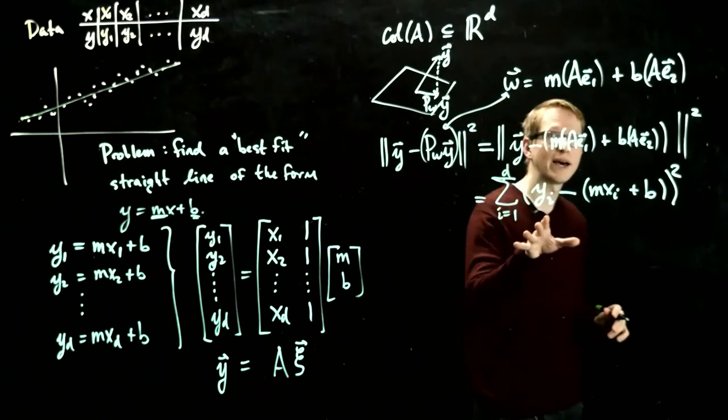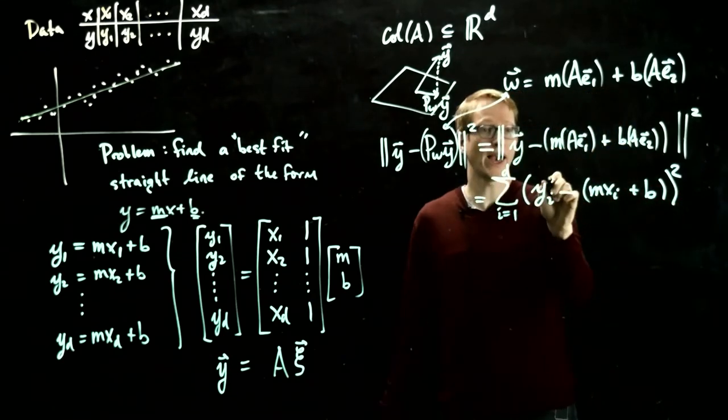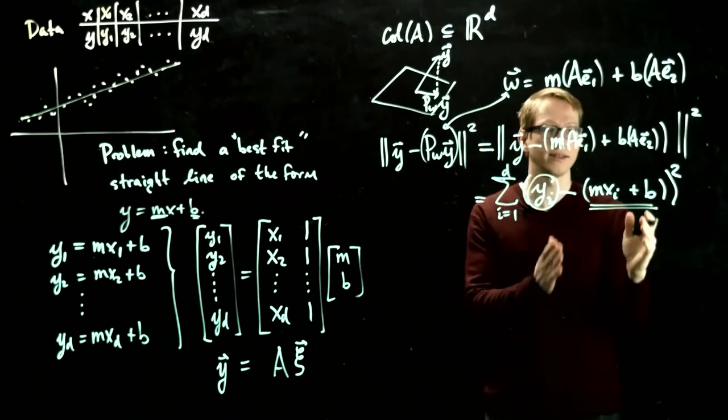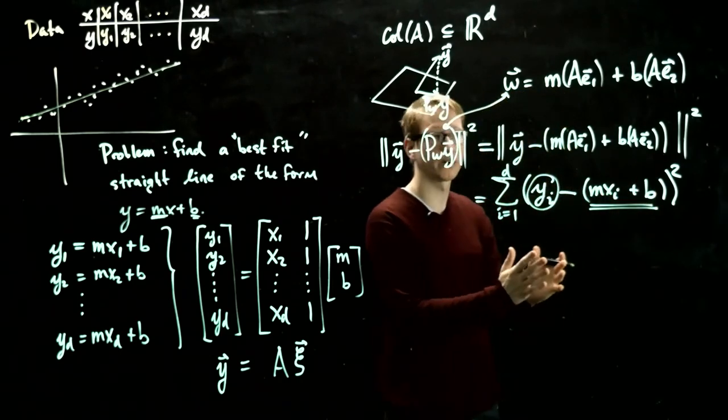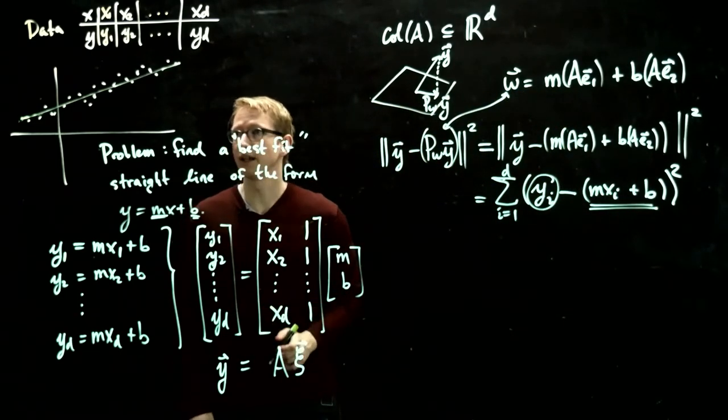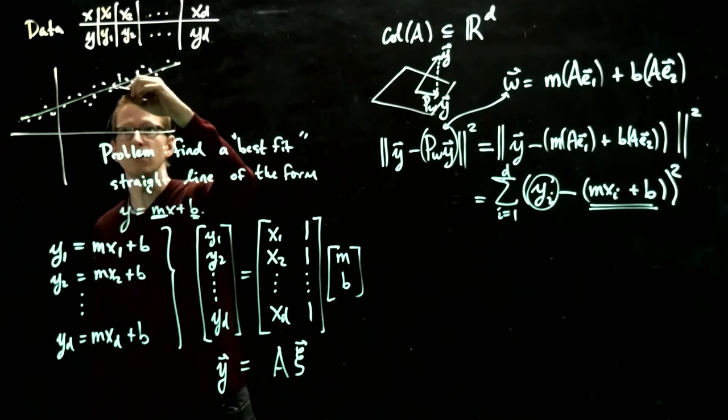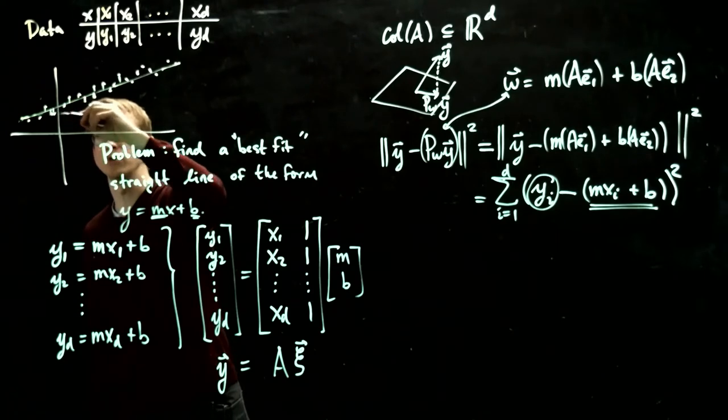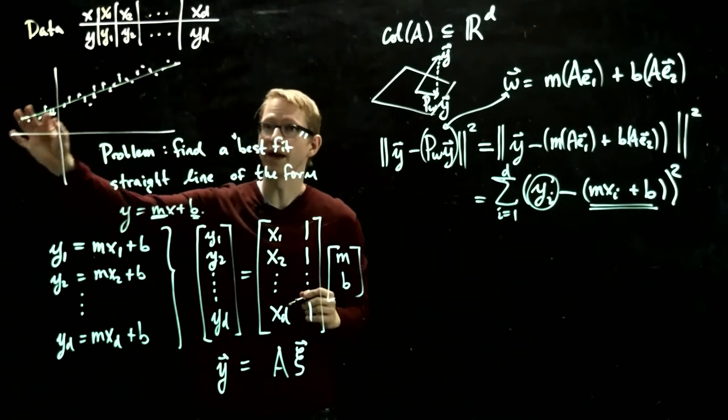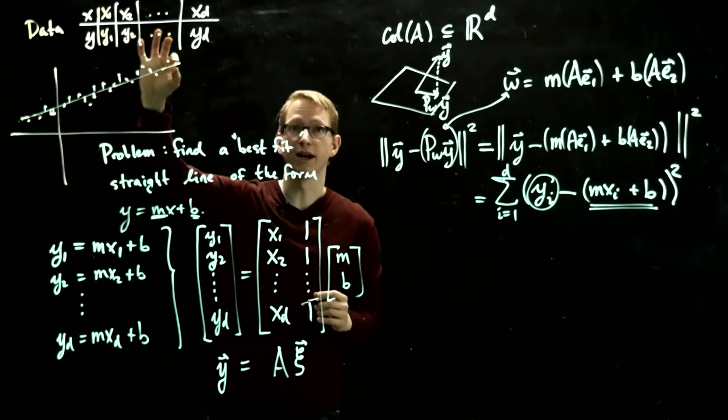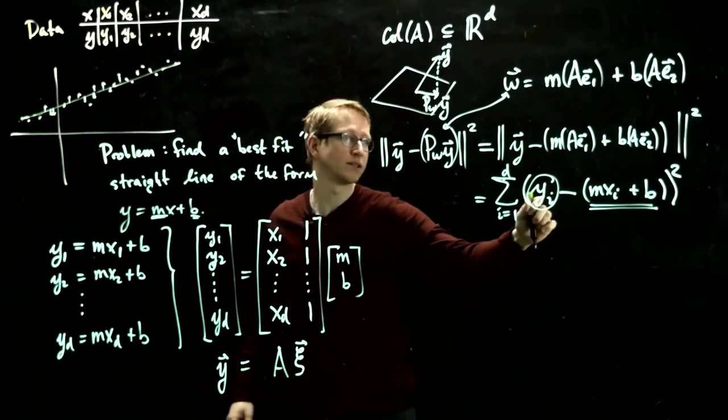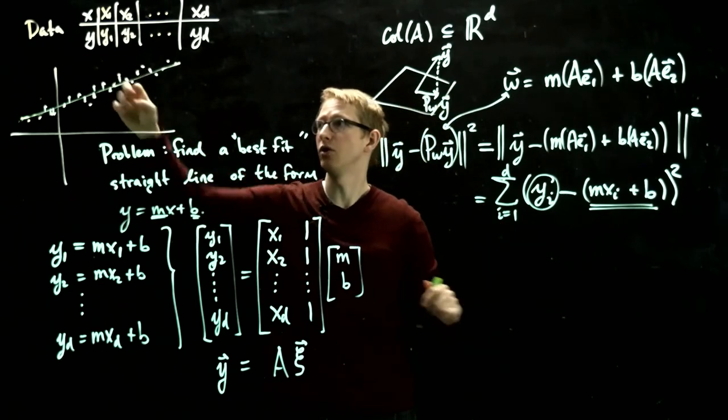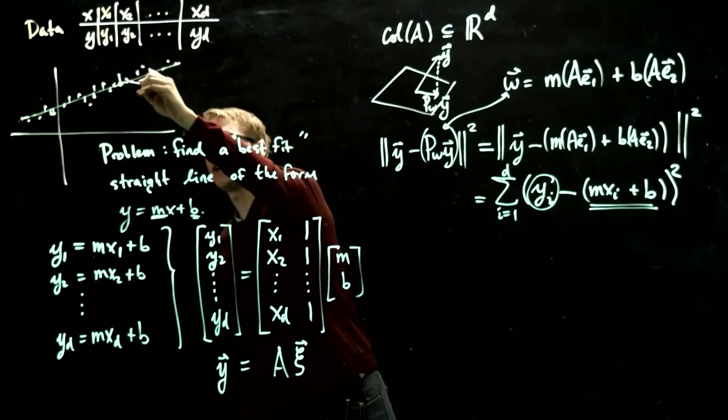So we want to minimize this expression. In other words, we're taking our actual data set y, and we're taking this, which is our best fit curve, using our data set x. And so we're trying to minimize all of these distances. So these are actually the vertical distances between the best fit curve and this line. It's the vertical distances, because this is saying our y data point minus the value of this line at that point.